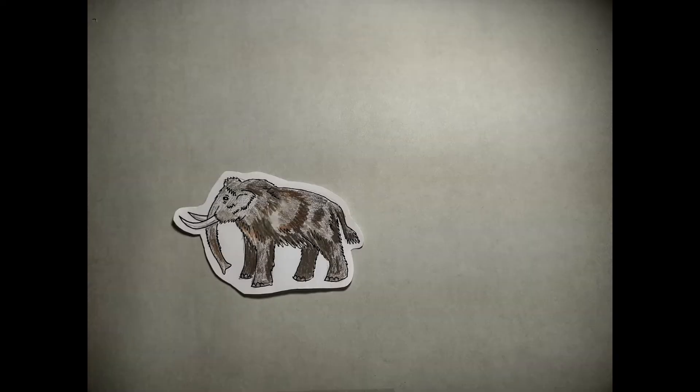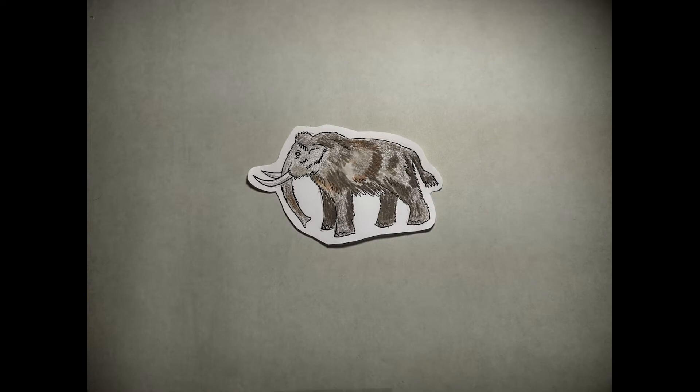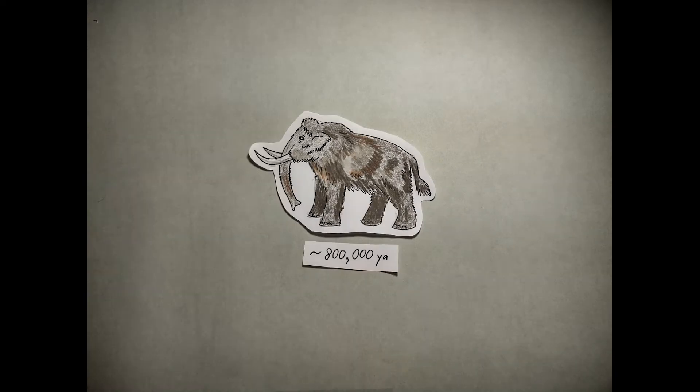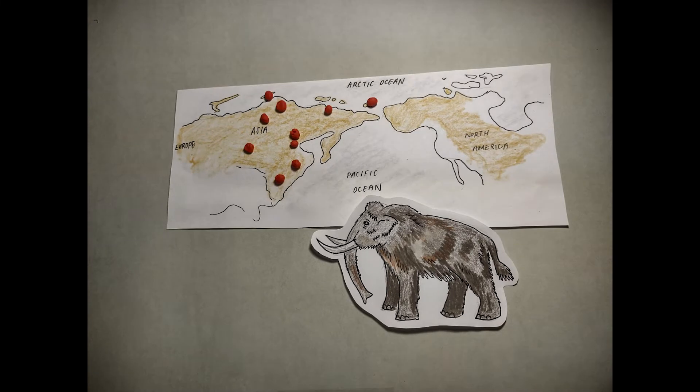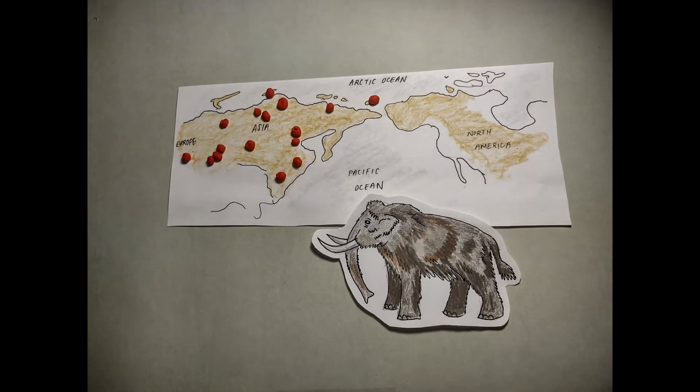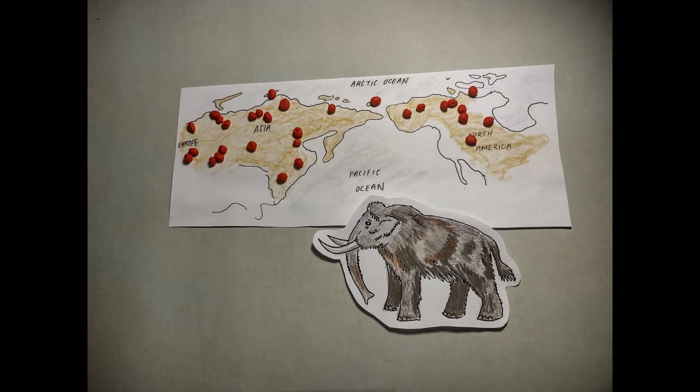Let's take the woolly mammoth. Mammoths appeared in East Asia some 800,000 years ago and were once widespread across northern Asia, many parts of Europe and the northern part of North America, in a biome known as the tundra steppe or the mammoth steppe.